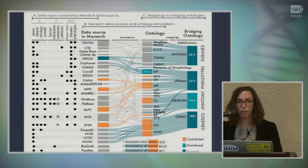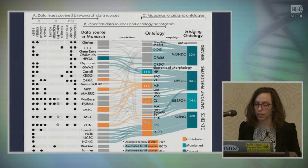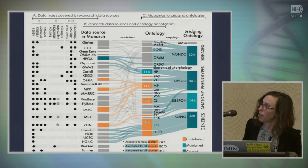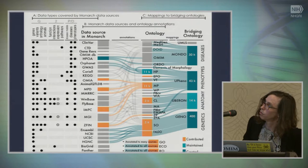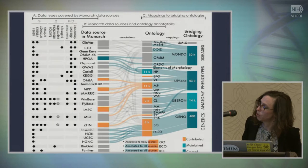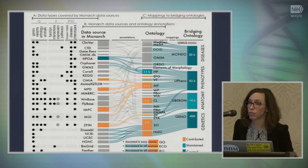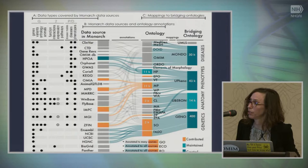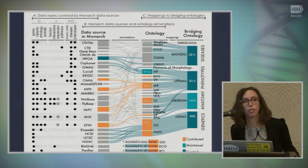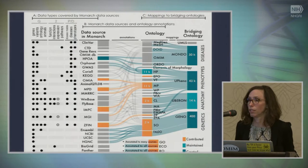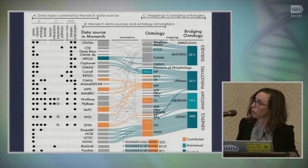This forms the basis of large-scale data integration. Monarch aggregates data from many different sources, with different data types in the genotype-to-phenotype buckets. Each source uses a different ontology to capture phenotype data, gene expression data, genotype data, or anatomical data. In some cases there aren't any ontologies, and we use text mining tools and manual curation in combination to apply those and facilitate the use of data that may not be computationally tractable.